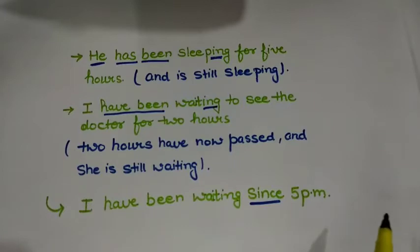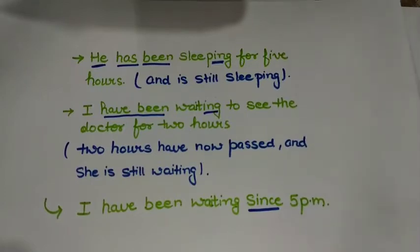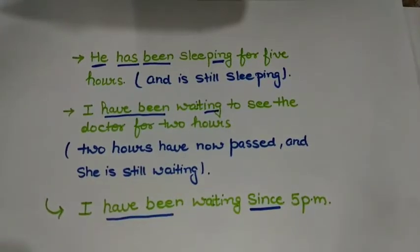One more example: 'I have been waiting since 5 pm.' Here 'since' represents the starting point — I started waiting when it was 5 pm and I am still waiting. In all these examples, the action began in the past and is still in a continuing process, so we use present perfect continuous tense.